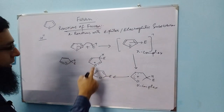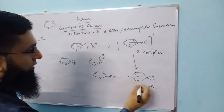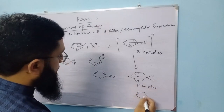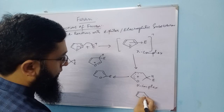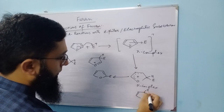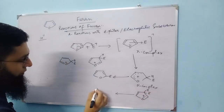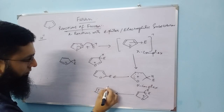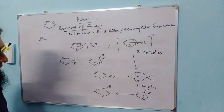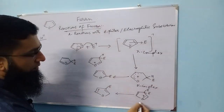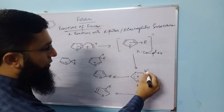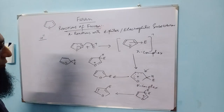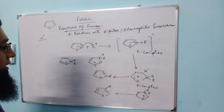In this case we get the 2-substituted product, and we can also have a corresponding sigma complex. This sigma complex is more efficient compared to the other one. So generally, electrophilic substitution takes place at the 2-position.